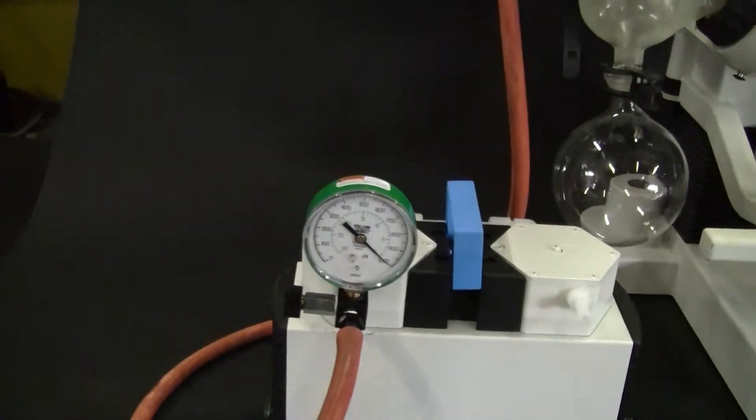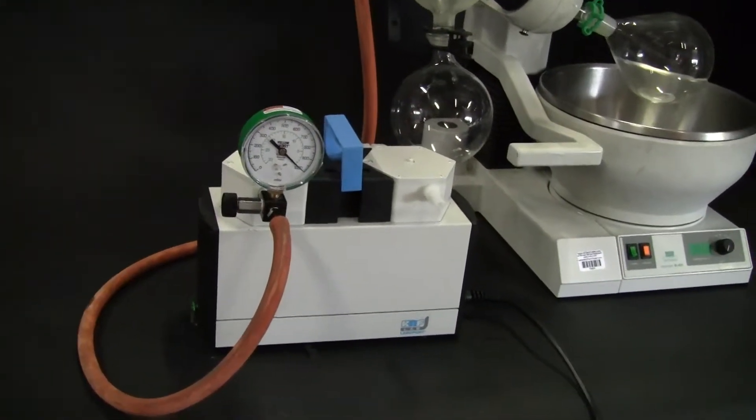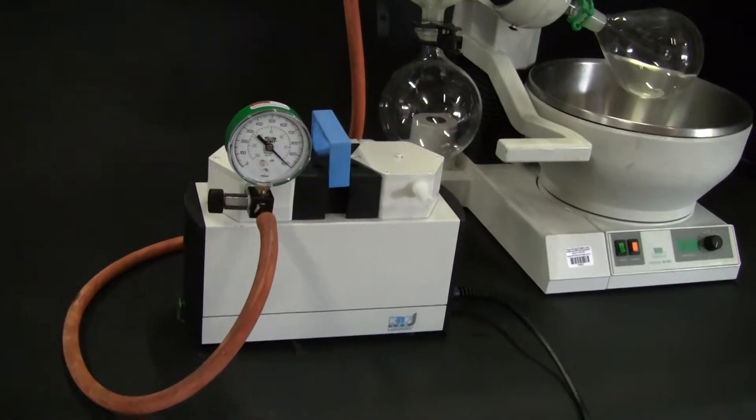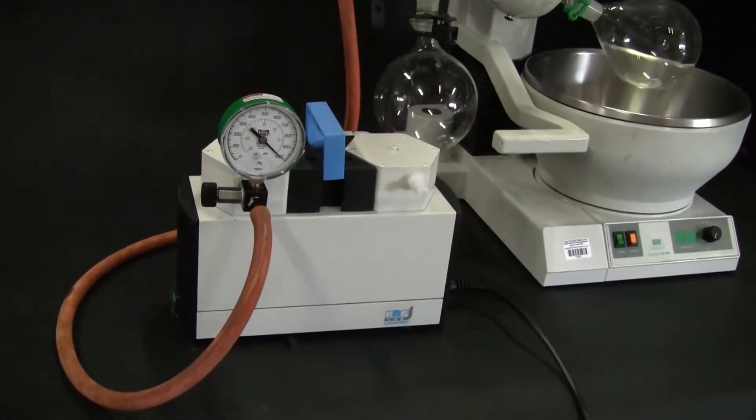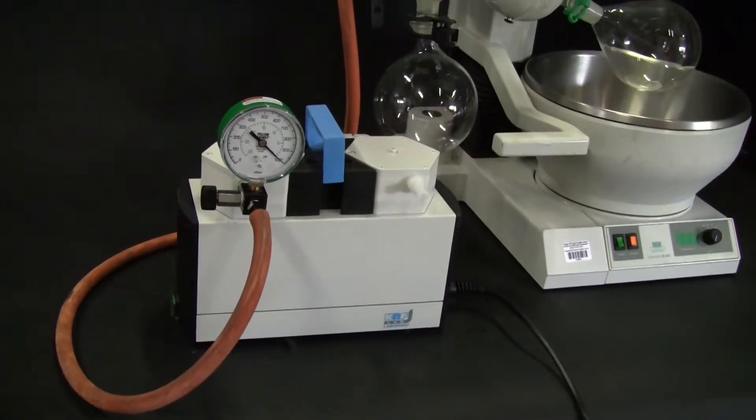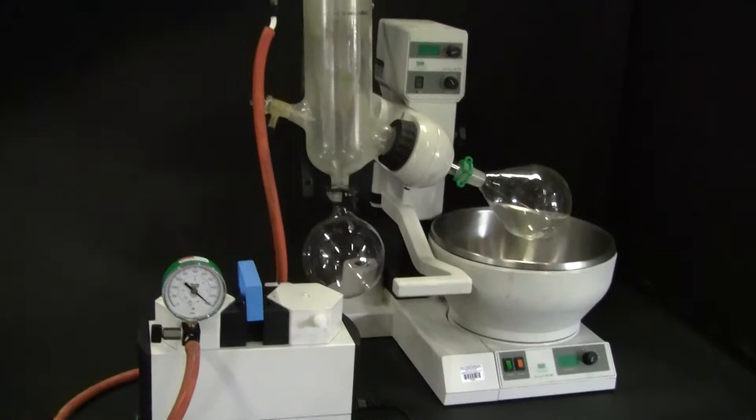What this allows you to do is to adjust the vacuum. We've seen this application in filtration, vacuum ovens. It's very useful to have this gauge package on it. Today we're looking at a Roto-Vap system and what we're going to demonstrate...